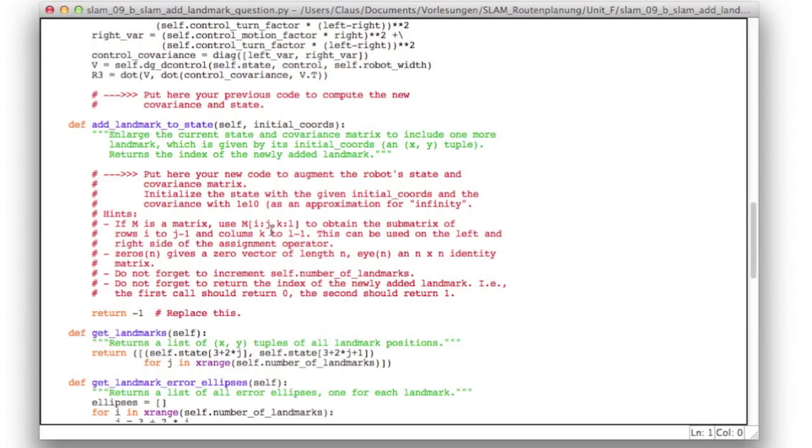And it should enlarge the state vector by two elements for x and y of the landmark. And the number of rows and columns of the covariance matrix, also by two, should increment the member variable number of landmarks. And it should return the index of the newly added landmark instead of minus one. That is all there is to do.